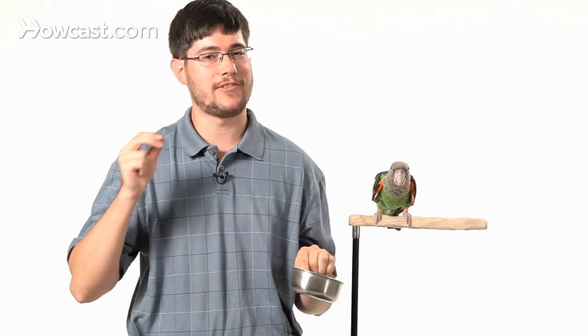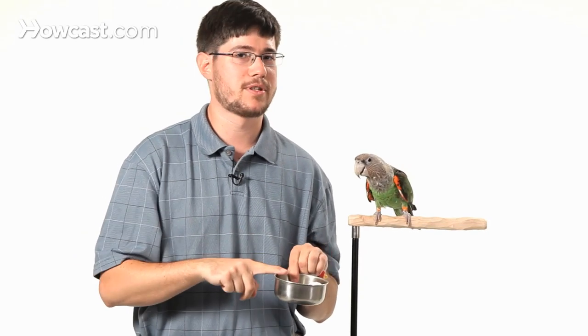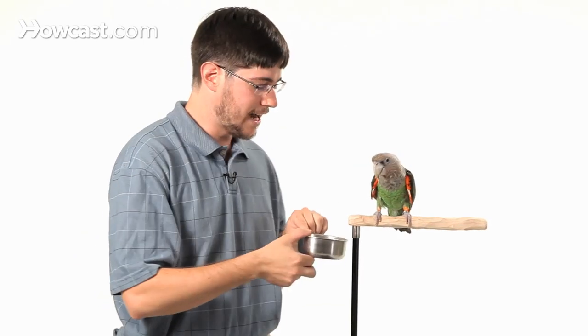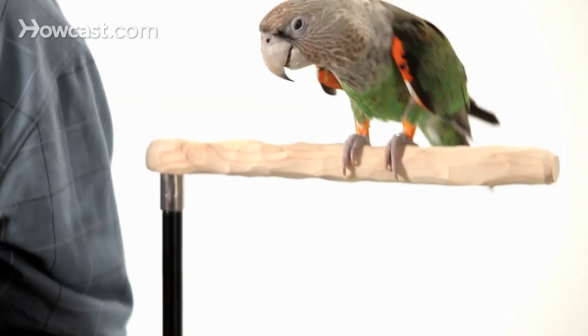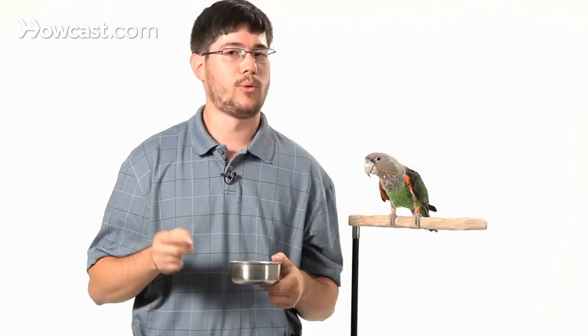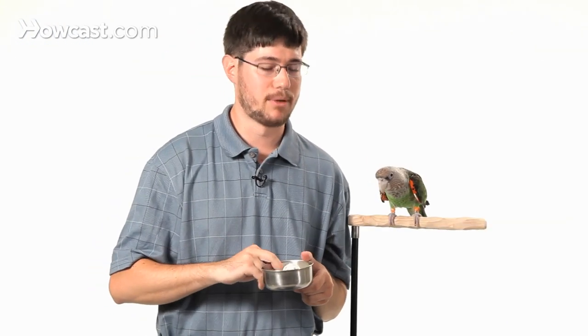So in order to teach it to actually fetch and to put it in the bowl as opposed to just dropping it anywhere, is to occasionally hold the bowl out of place where the bird cannot get the object inside. And then it learns that it only gets the treats when it drops the object straight in the bowl.